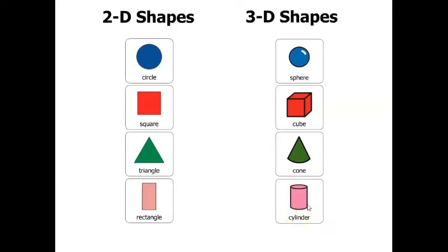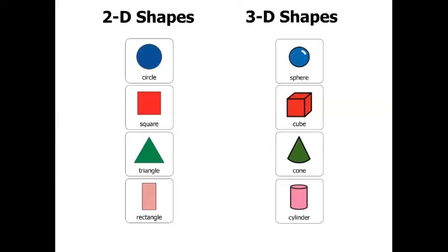These are shapes. Now let's check out our shape hunt. Today you're going to go on a shape hunt and find 3D shapes. You can find objects that look like a sphere, a cube, a cone, and a cylinder.